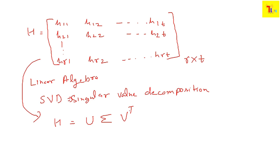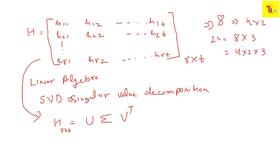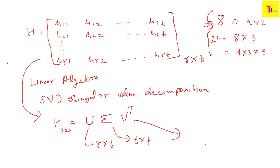What does this mean? We have written our R×T matrix as a product of three matrices. It is similar to how we can write 24 as 4×2×3 — we decompose the matrix into SVD format to ease our calculation. Here U is an R×T matrix, Σ is a T×T matrix, and V^T is also a T×T matrix. When the component matrices are square, calculations become easier.